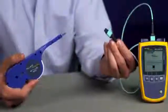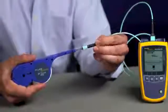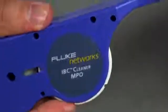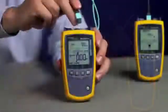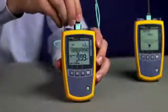Begin a test by setting the reference. As usual, clean the end-phase connectors with our one-click MPO cleaners. Then simply connect one of the given test cords to the power meter and the light source.